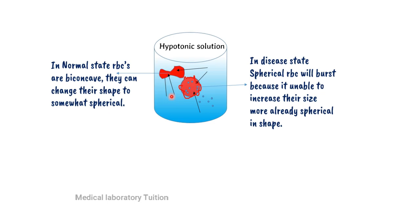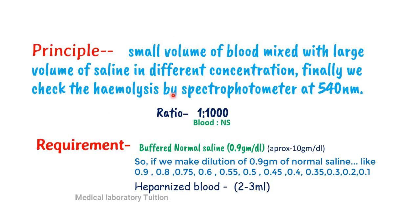We measure this with the osmotic fragility test to determine whether the patient is normal, has hereditary spherocytosis, or thalassemia. The principle is that a small volume of blood is mixed with a large volume of saline in different concentrations, and finally we check the hemolysis by spectrophotometer at 540 nanometers. The volume can be changed but not the ratio — the ratio should be 1:2000, one part blood to 2000 parts normal saline.